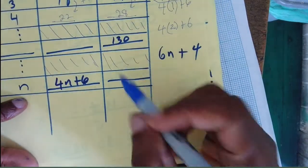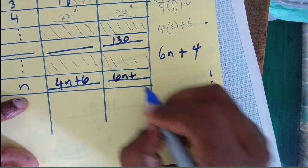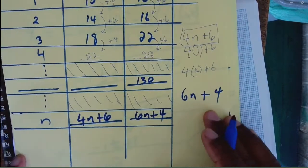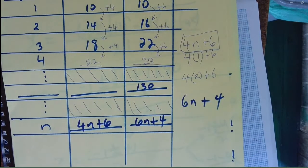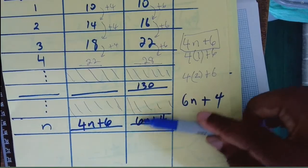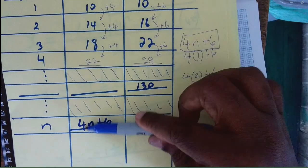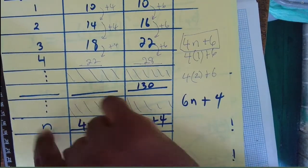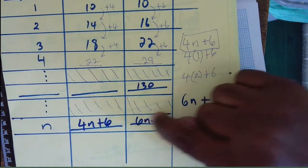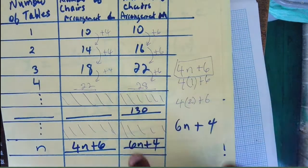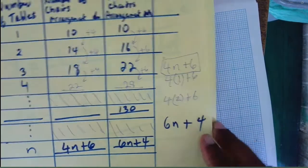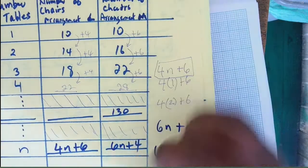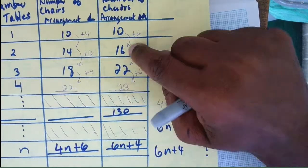6 times 3 is 18, plus 4 is 22 — it works! So the nth term formula is 6n + 4. Now here's what I wanted to show you: if I equate the formula to any one of the values in the sequence, I'll get the figure number. All of these terms equal 6n + 4.